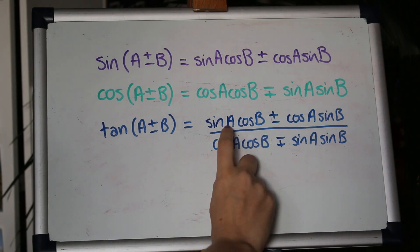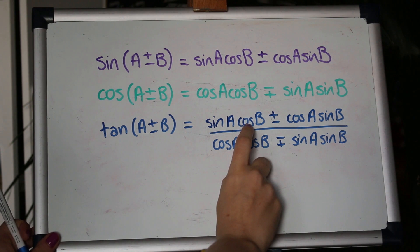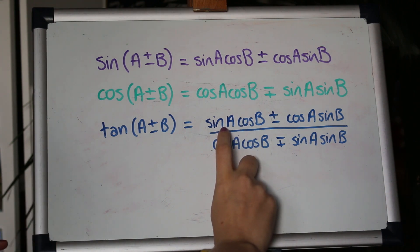So on top when we divide by cos a cos b, dividing sin a by cos a will give us tan a and dividing cos b by cos b will just cancel out so we'll be left with tan a.